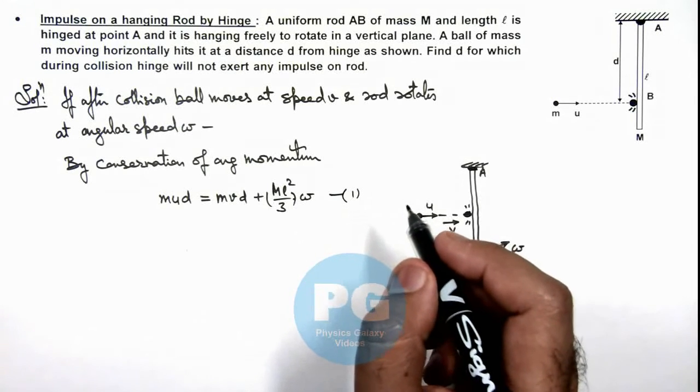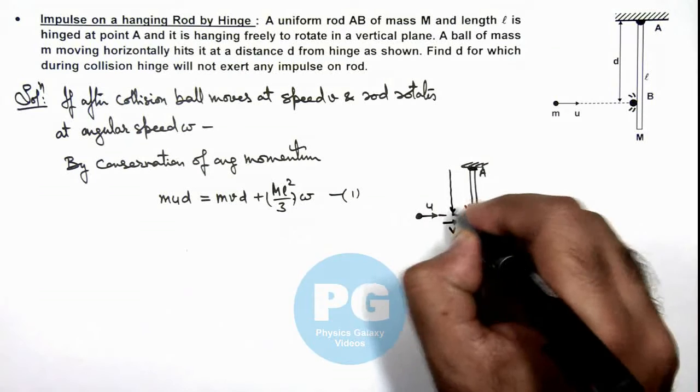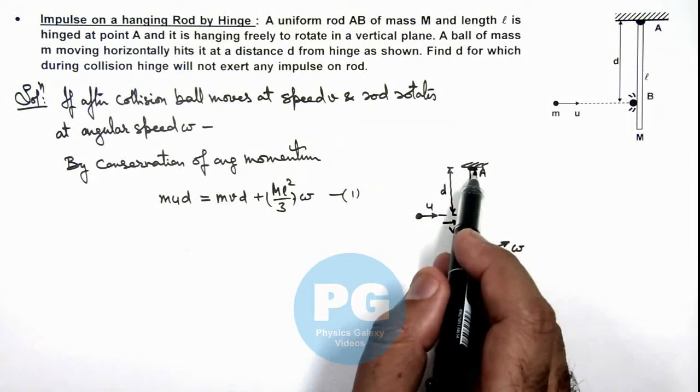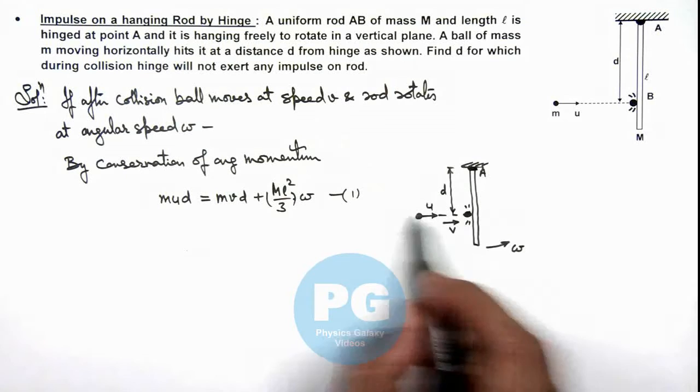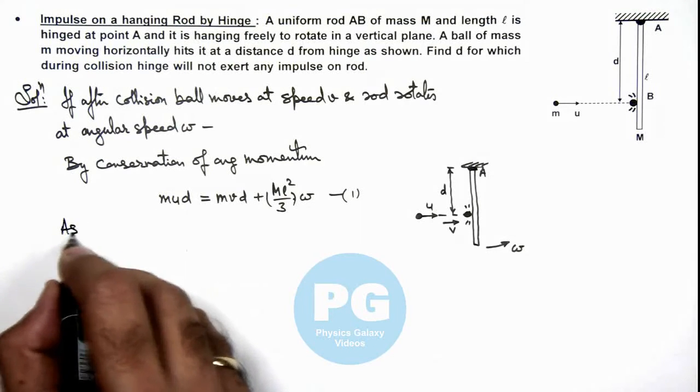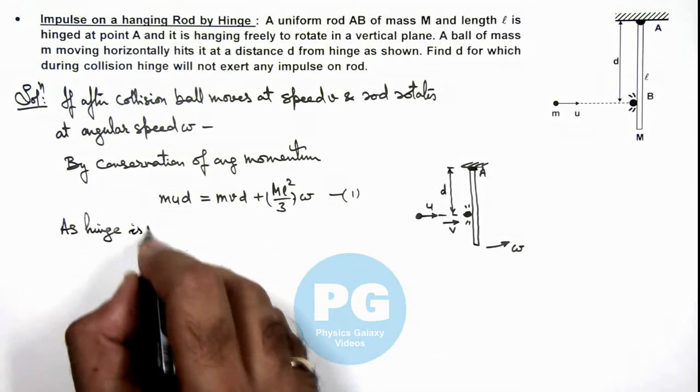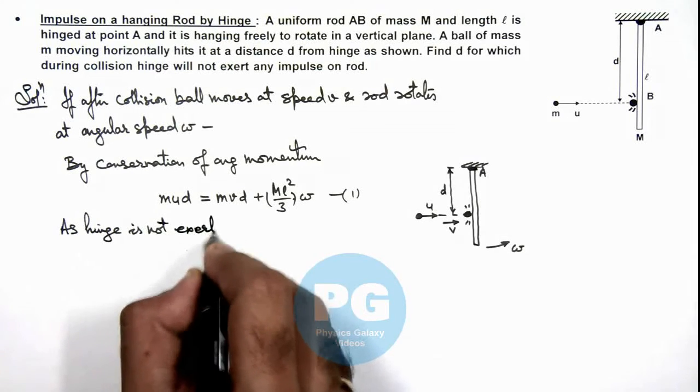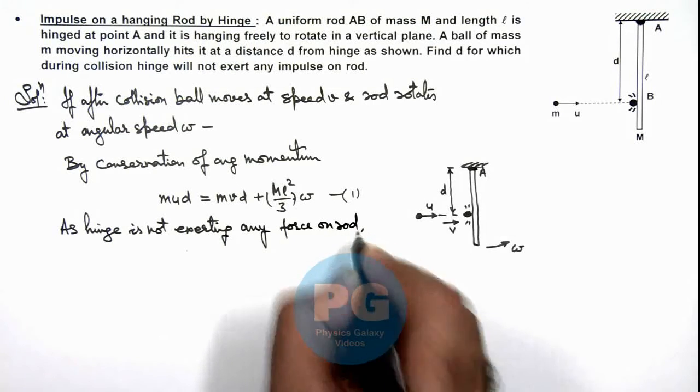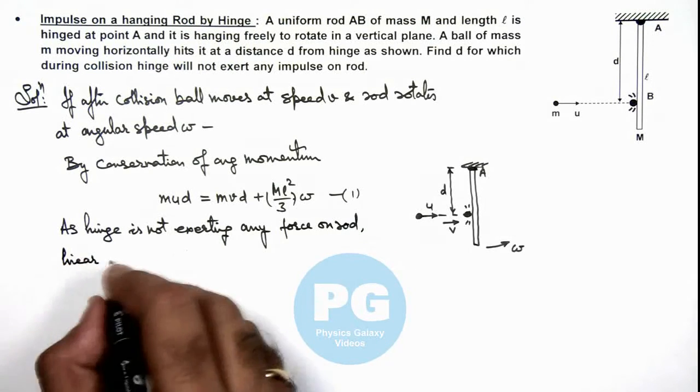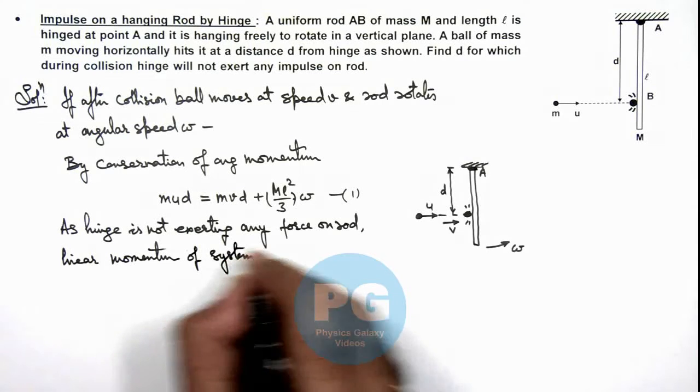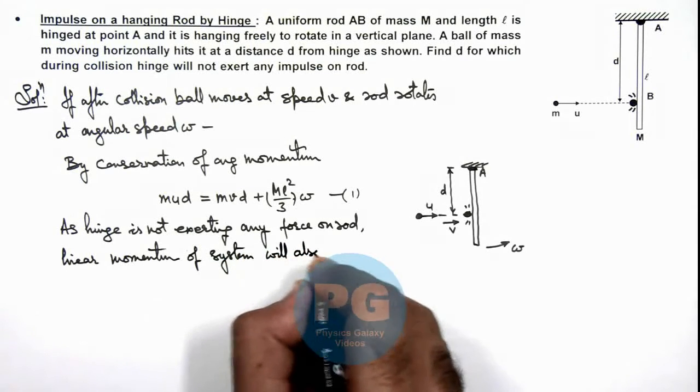And we are given that at a particular value of d where the ball is hitting, the hinge will not exert any impulse on rod. That means there is no external force on rod. That means there is no external force on rod in horizontal direction, so linear momentum of this system should also remain conserved. So we can write, as hinge is not exerting any force on rod, linear momentum of system will also remain conserved.